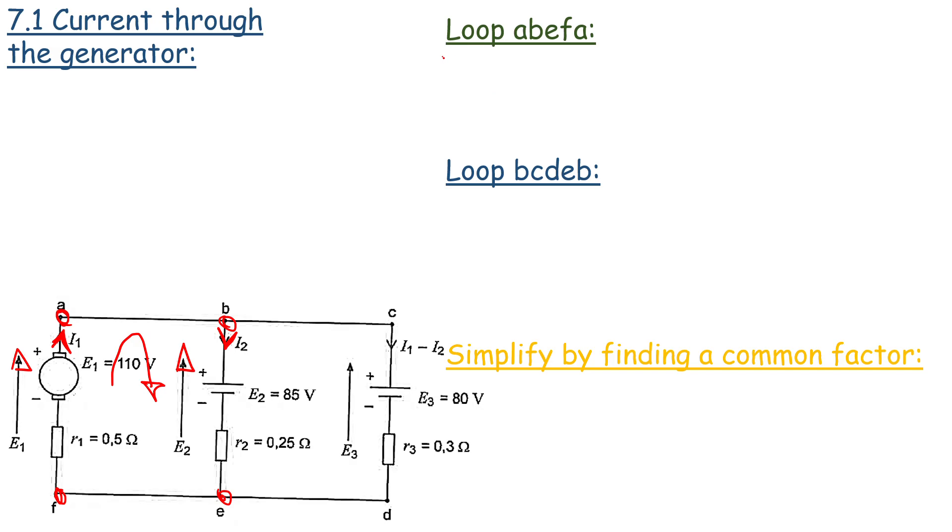So let's write that here. Our first battery is positive. Our second battery is negative. Then we have plus I1 R1 plus I2 R2. Our first battery is 110 volts. Minus our second battery of 85 volts. That will give us 25 volts over there.